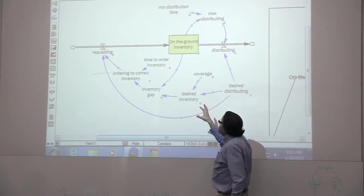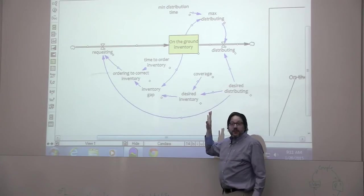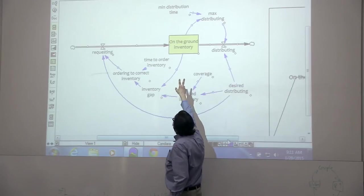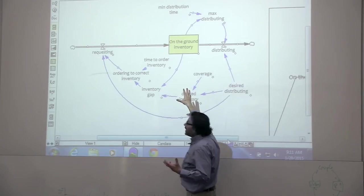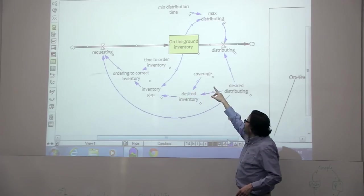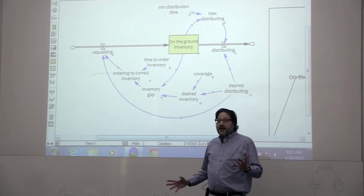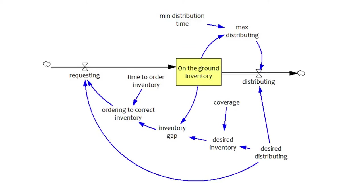The reason we use these is it's an aid to both thinking and to modeling, but the main thing to know is that we're representing, just to understand the iconography, the picture, is that the rectangle is a stock. So what this is saying is that we request goods if there's a disaster. We request goods and they flow into the inventory on the ground, that is, at the local area.